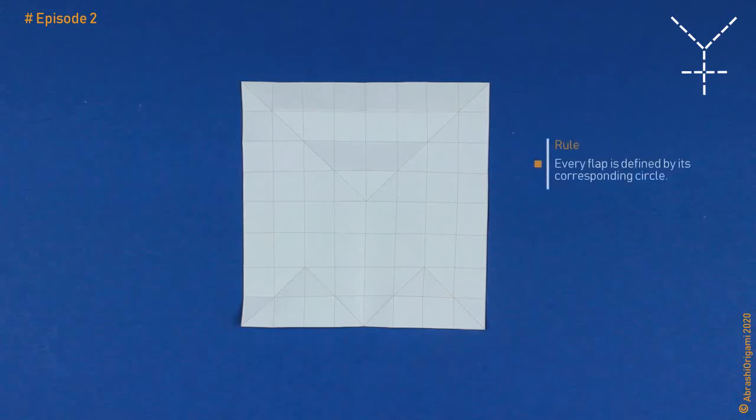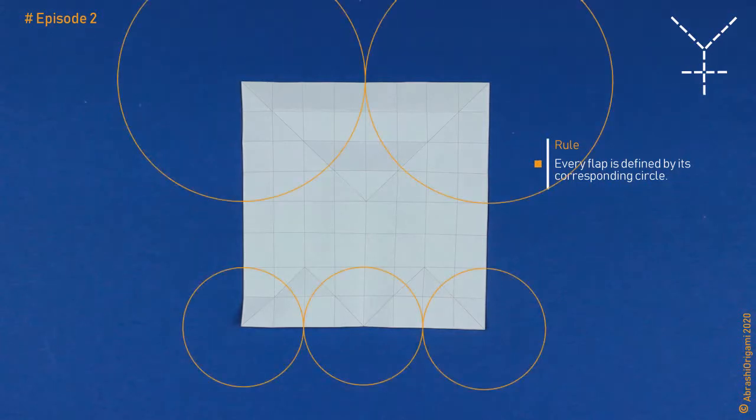Every flap is defined by its corresponding circle. If we have five flaps, we should have five circles too. So, let's add the circles. As you can see, we have two large and three small circles. Exactly the same as the number of flaps. In addition, you can see that the circles are for the most part out of the paper. Nevertheless, their centers are on the paper, they are on the paper edges. So, everything goes by the rules.